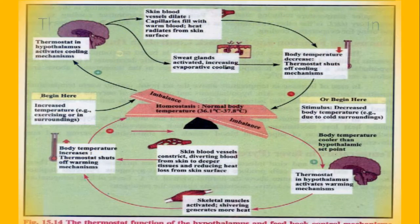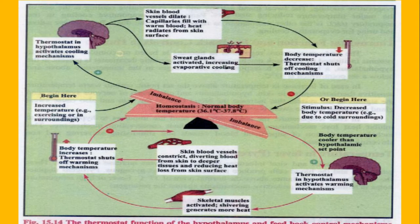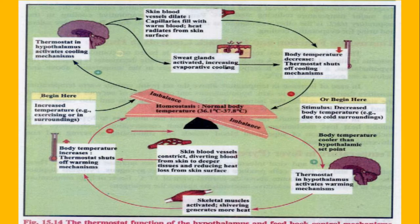یہ ایک flow chart آپ کے سمجھنے کے لئے ہے - thermostat function of hypothalamus۔ Homeostatic balance 37 degree پر maintain ہے۔ Imbalance کب آئے گا اگر heating میں چلا جائے یا cooling میں چلا جائے۔ Positive feedback کیا ہوتا ہے کہ جب ایک چیز increase کر رہی ہے تو دوسری بھی increase کر رہی ہے، that is known as positive feedback۔ لیکن اگر ایک چیز increase کر رہی ہے اور اس کے increase کرنے سے دوسری decrease کر رہی ہے، that is known as negative feedback۔